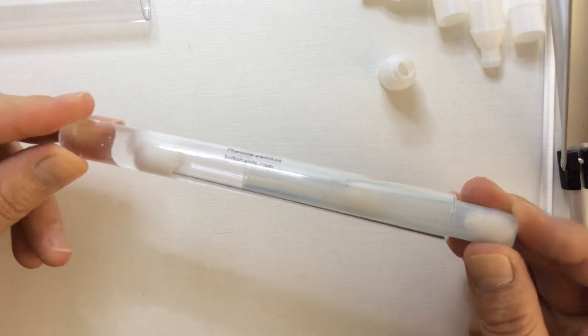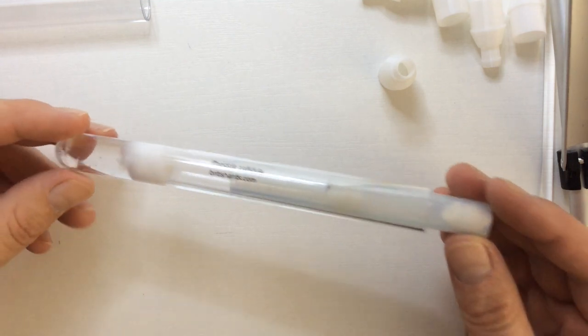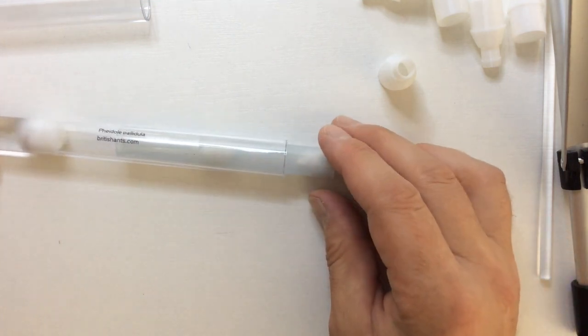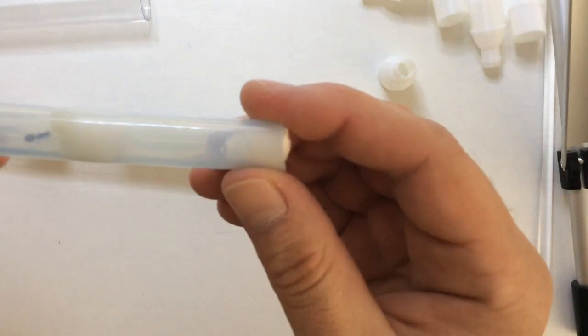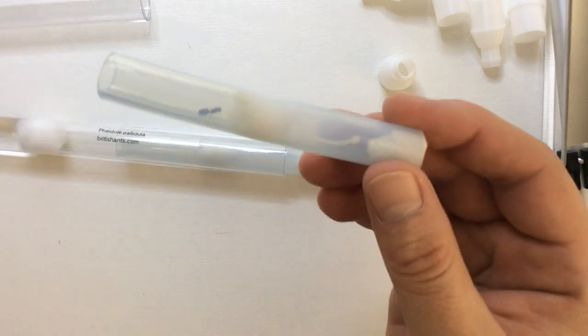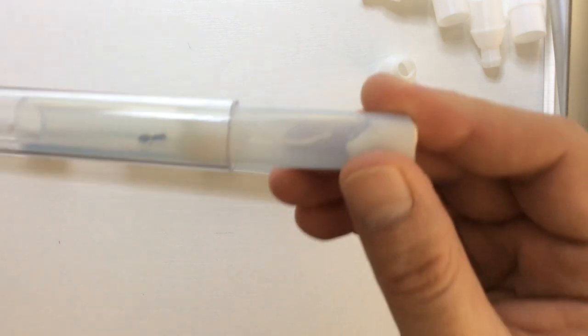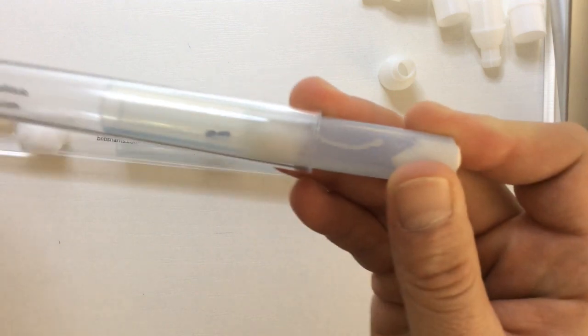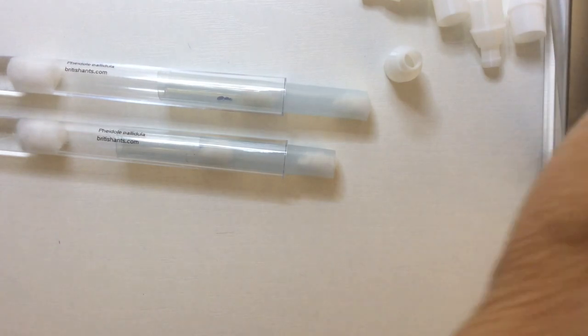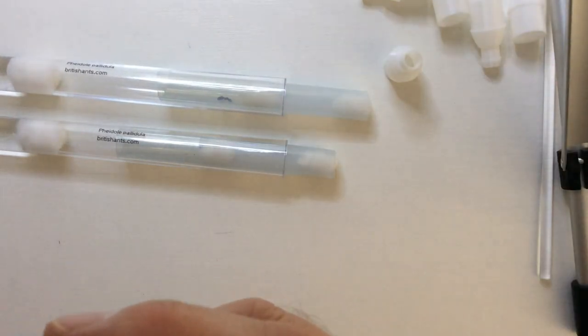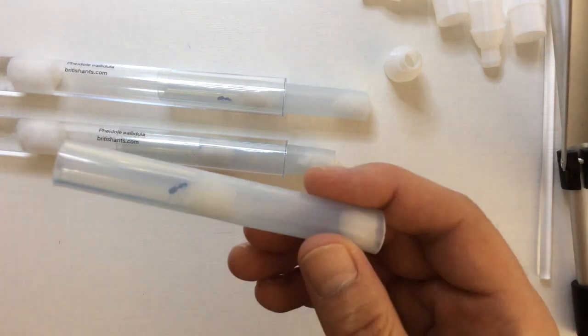This is another species, this is Formica pilidula, and this tubing fits quite snugly into these test tubes, so this was a little bit more convenient than the normal. We just push that straight in so there's no gaps, and they will move in as and when. Again, the same thing applies, we'll just put some acetate over those to try and encourage them in.